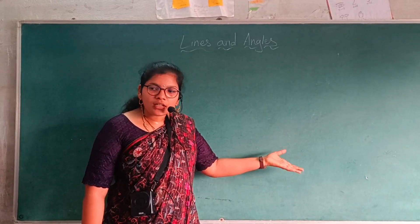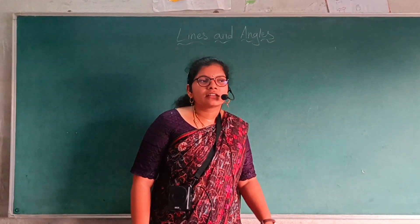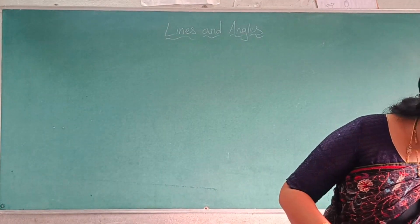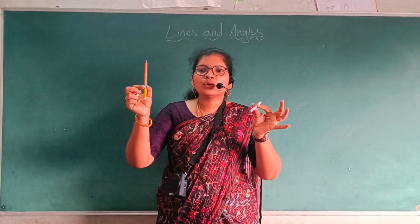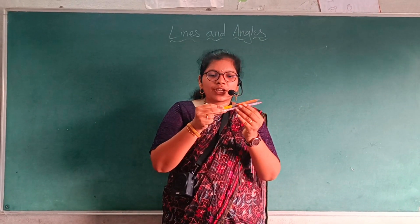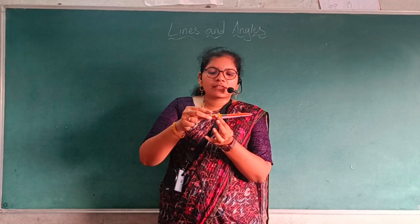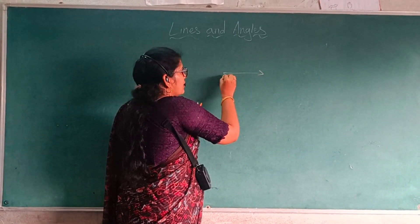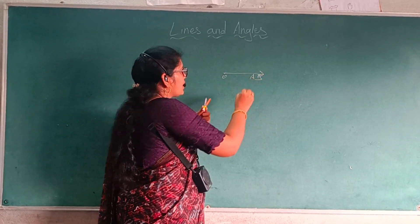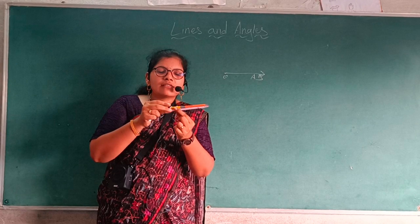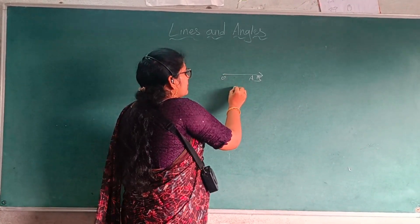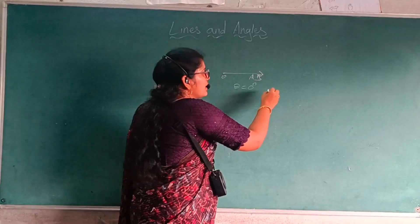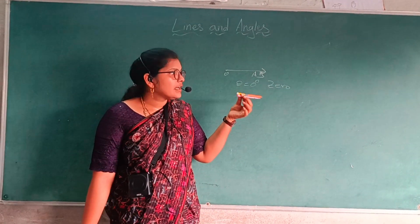We learned about lines. Now we are going to learn about angles. The best example of angles is a clock — there are two hands, meaning two rays joining at a point. I am taking two pens here: I assume these two are two rays and I am joining them together at the same point. When two rays are on the same point, this is called a zero degree angle. Theta is equal to zero degrees, and this complete angle is called a zero degree angle.